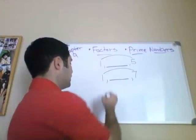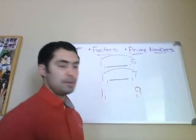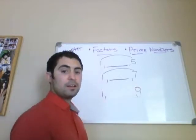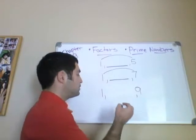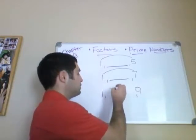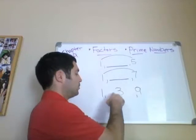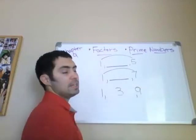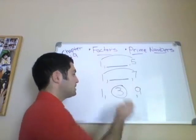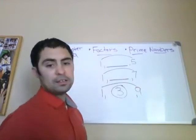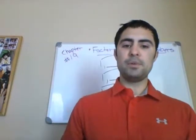Let's do another one — 1 and 9. Is 9 a prime number? No, it's not. And why isn't it a prime number? Because you take 3, you multiply 3 times 3, and you get 9. So there is another factor besides the two outside ones. That's what a prime number is.